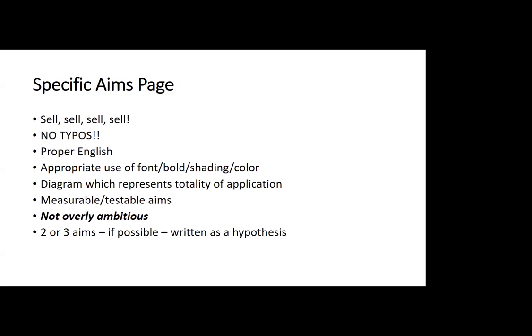The next critical area is the specific aims page. This is where the science or your scholarship now shines. The specific aims page, as you all probably know, is one page. Absolutely no typos — you can't imagine how many we get. As soon as a typo appears, when you're competing against somebody else who has a flawless, beautiful grant, that typo can take you from a score of one to a four. Make sure it's proper English with no grammatical or punctuation errors.